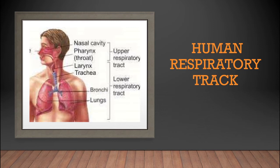Blood capillaries and mucus maintain our air temperature at 30 to 37 degrees centigrade, because our body temperature is 37 degrees centigrade and the external environment temperature is different. The external air is warmed up to body temperature by the mucus and the surrounding blood capillaries.